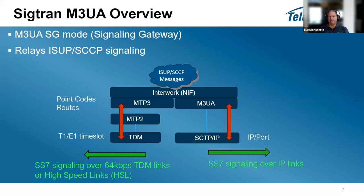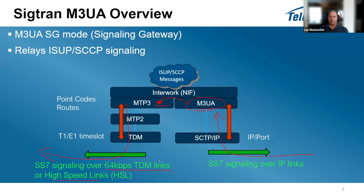In signaling gateway mode, the M3UA level is configured differently: it attaches to the MTP3 network. You can still receive M3UA packets from the IP network. When the signaling gateway is configured, it finds an MTP3 network in the system. If the point code is owned by MTP3, it sends the packet there, and MTP3 knows how to forward it over TDM links — either 64 kbps or high-speed links.